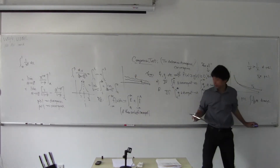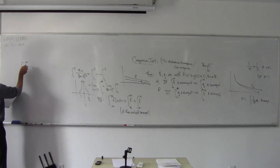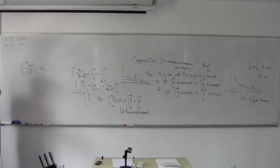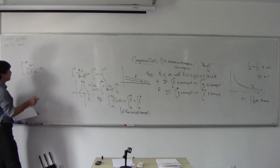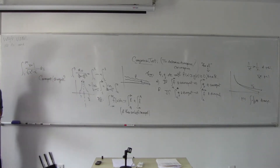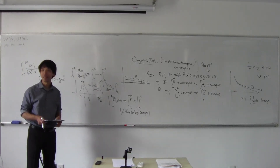Let's do some examples. Somebody gives you the integral from 1 to infinity of (x+1) over the square root of (x⁴ − x), and asks: is it convergent or divergent? Tianwenhao says divergent. Who else says divergent? Who says convergent? Two people say convergent, one person says divergent.